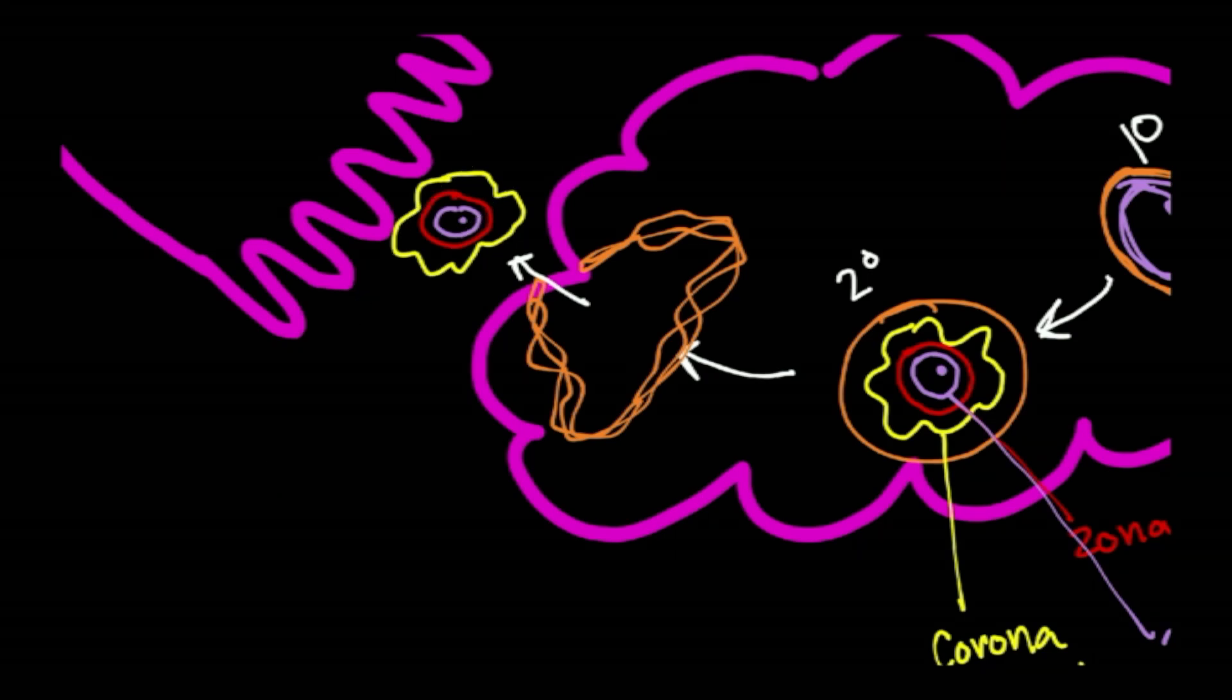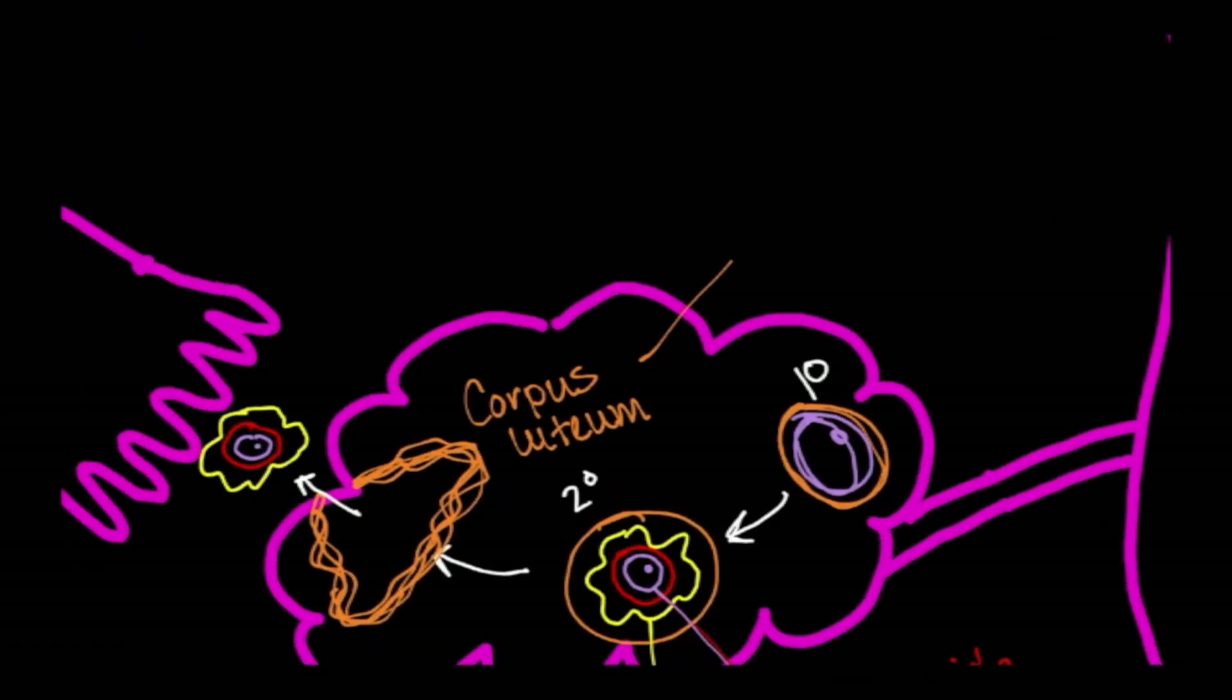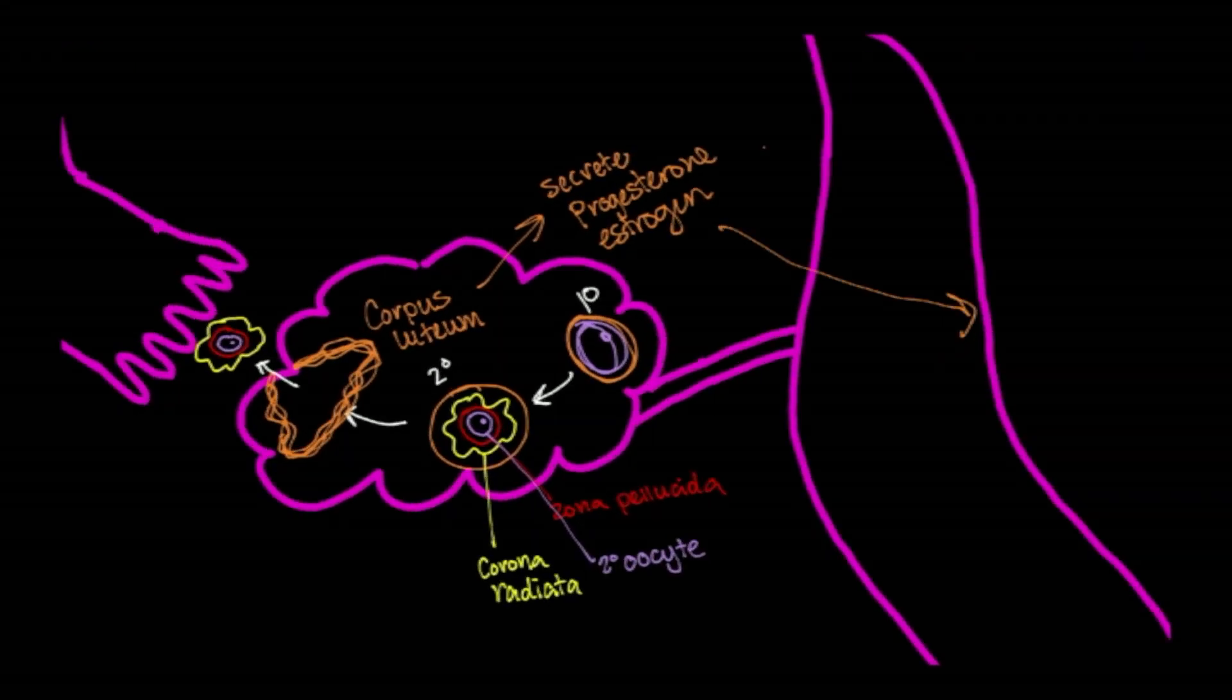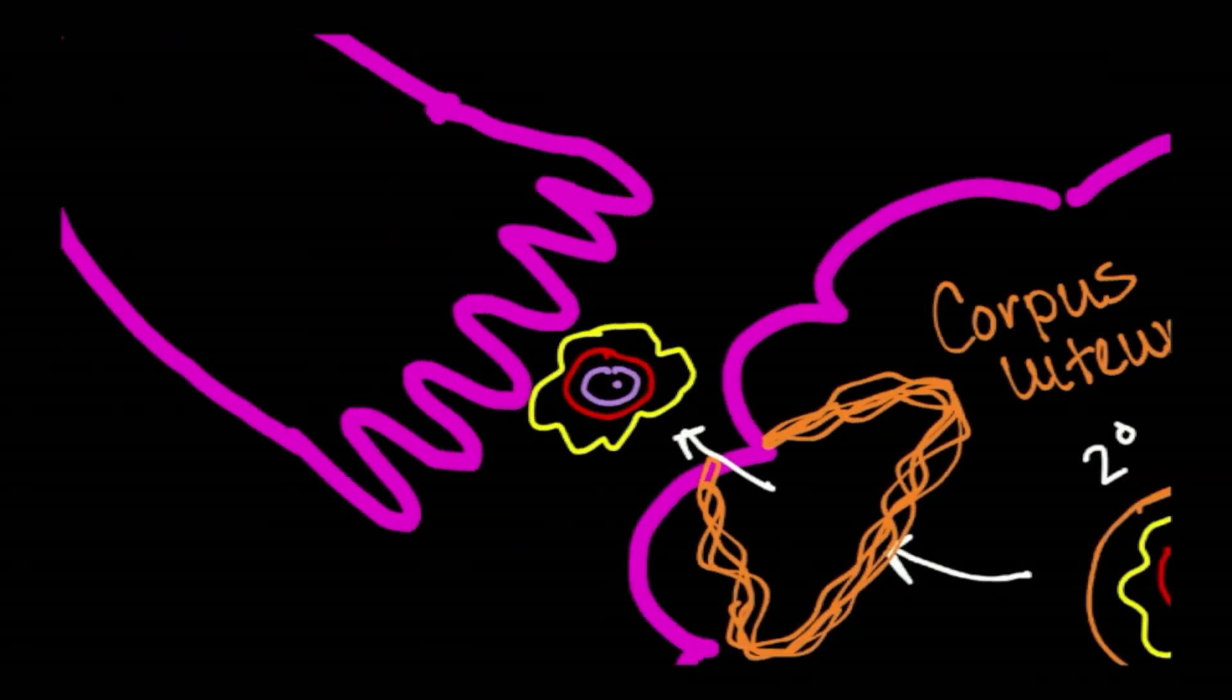What's left behind of a portion of the follicle is what is called the corpus luteum. And the function of the corpus luteum is to secrete progesterone and estrogen. And what this will do is it'll tell the endometrium to not undergo menstruation, to not shed that thickened endometrial lining, and to prepare for implantation, because the egg is on its way, and hopefully it will get fertilized.